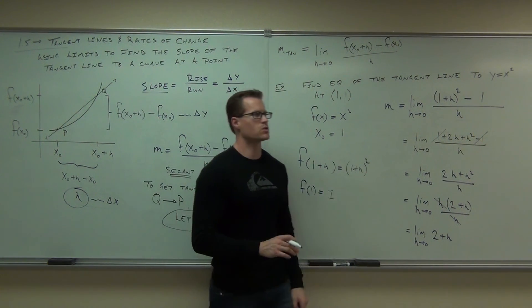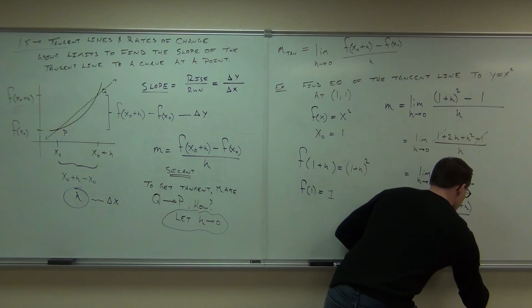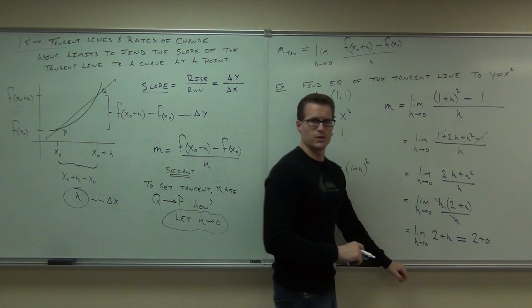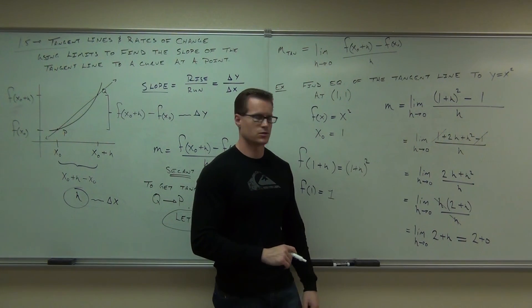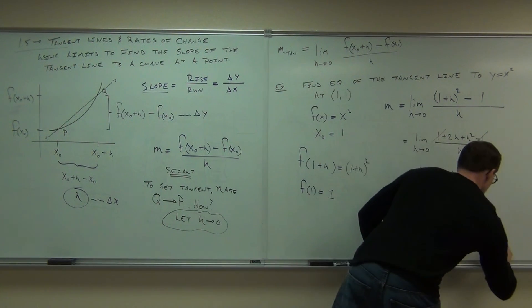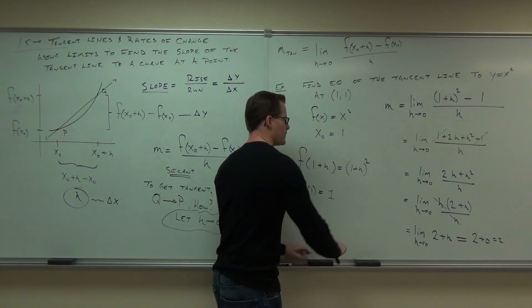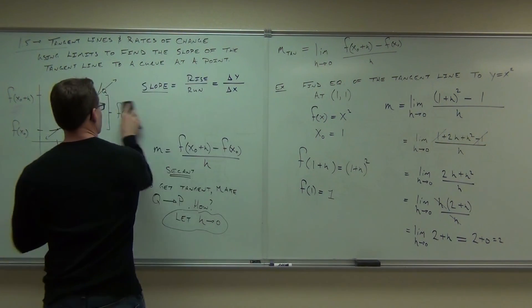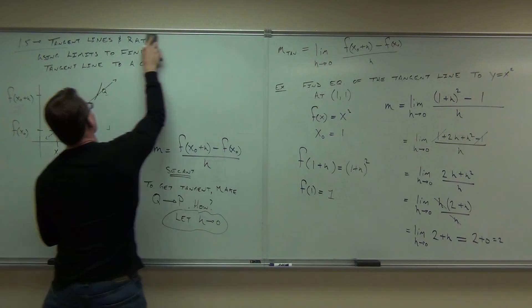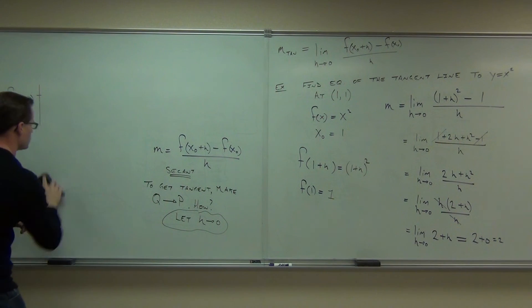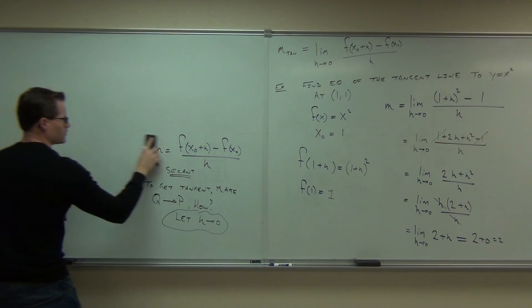Now we're fine. We have no issues. Now you stop writing the limit. You write 2 plus 0. 2 plus 0 is, of course, 2. You're going to write the limit.